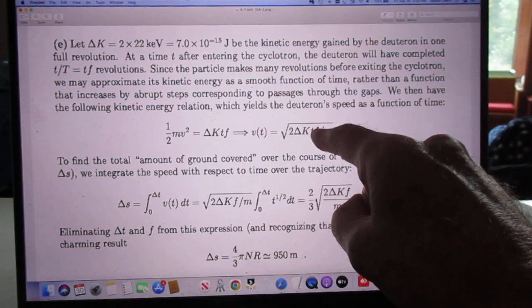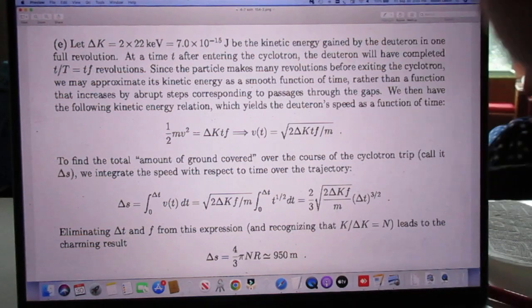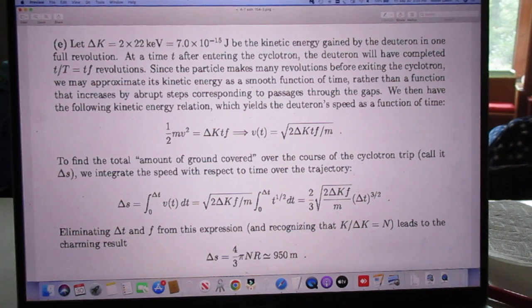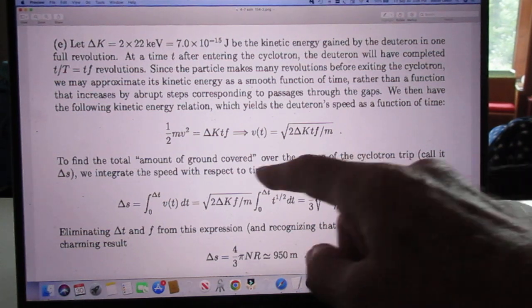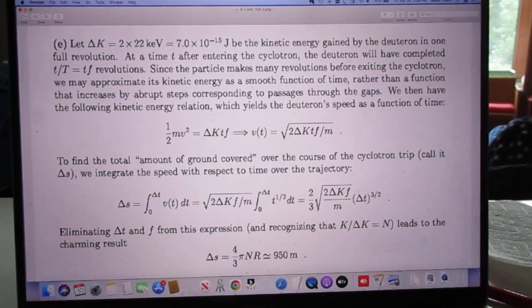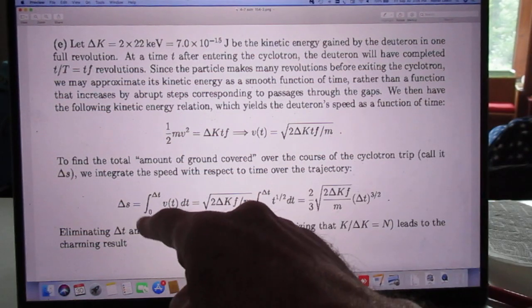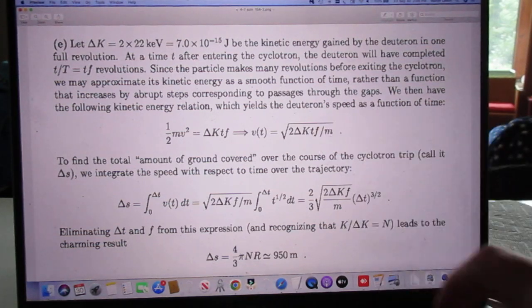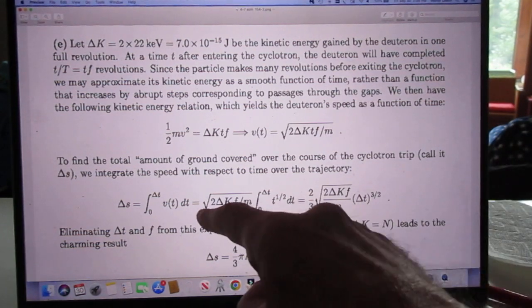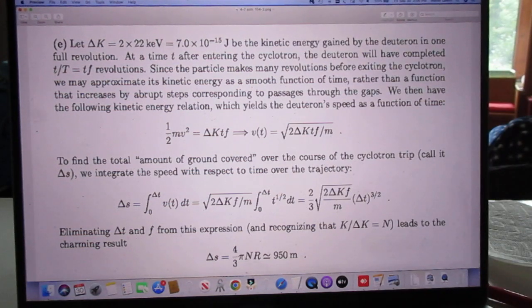To find the total amount of ground covered over the course of the cyclotron trip, let's call that delta S, we integrate the speed with respect to time over the trajectory. So we get delta S is the integral from 0 to delta T times V dt, and we know V, and so that comes out to be this integral.